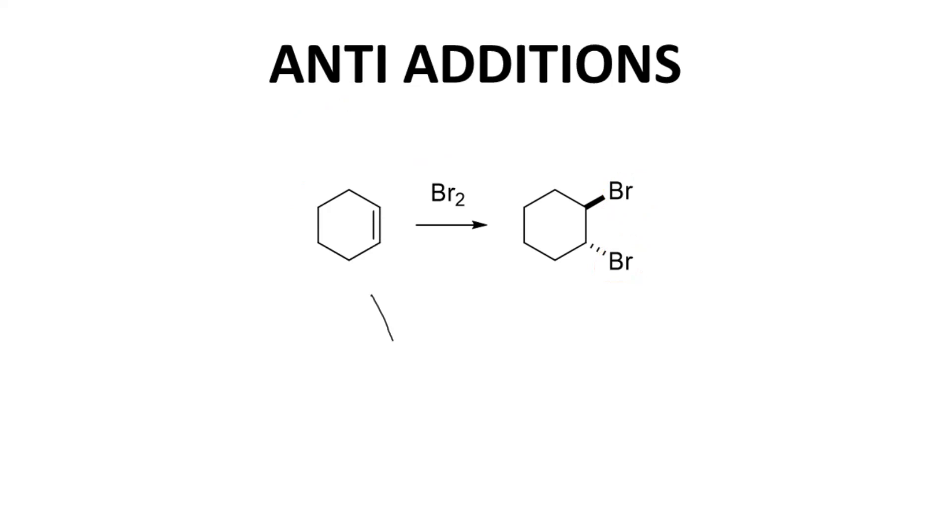The reaction goes through a bromonium ion intermediate. One halogen forms the bromonium ion on one face of the alkene, and I've shown the top face here. And the other halogen, now a halide, a bromide anion, opens up the bromonium ion from the opposite face. That sets up the bromines on opposite faces on what was the alkene.